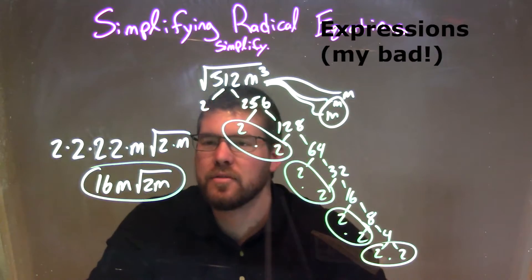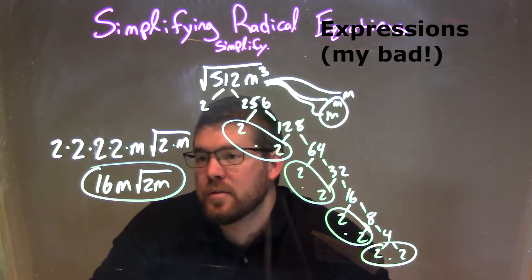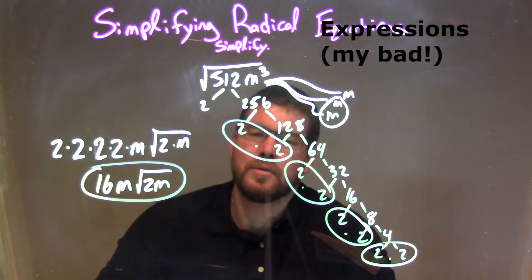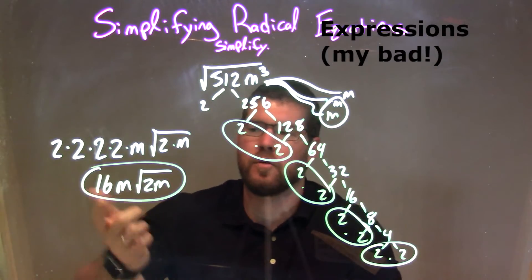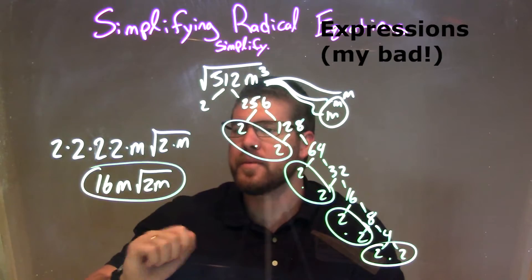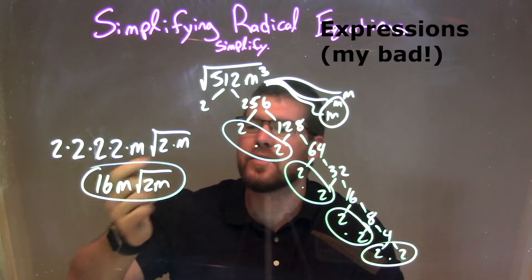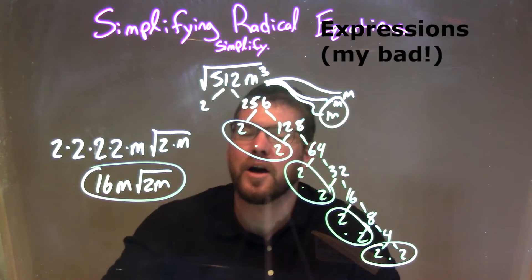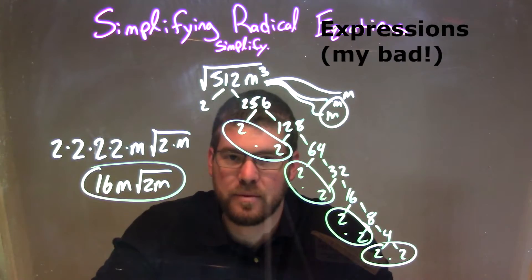So again, it's multiplication there, and then we simplify. 2 times 2 times 2 times 2 is 16, and so our final answer, simplified, is 16m times the square root of 2m. Thank you.